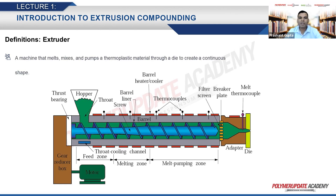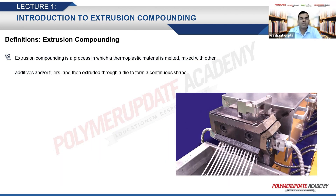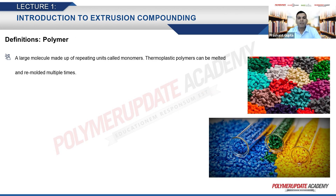What is an extruder? It is a machine that melts, mixes, and pumps a thermoplastic material through a die to create a continuous shape. Next is extrusion compounding — a process in which a thermoplastic material is melted, mixed with other additives and/or fillers, and then extruded through a die to form a continuous shape.